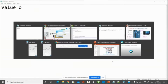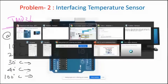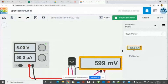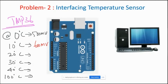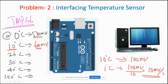Noting that down: TMP36 sensor at 0 degrees centigrade gives 500 millivolt output. For 10 degrees centigrade the value is 599, roughly 600 millivolts. So from 0°C at 500mV to 10°C at 600mV — a difference of 100 millivolts for a 10-degree rise. That is 100mV divided by 10, which is 10 millivolts per degree centigrade. For every degree rise in temperature, this sensor gives an output of 10 millivolts.